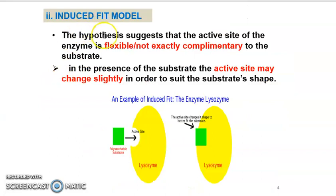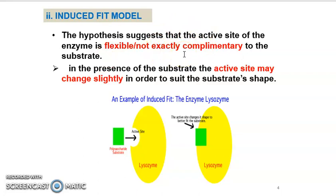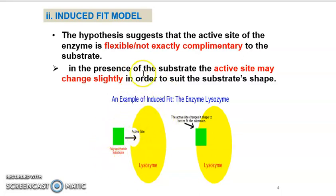What is the difference with the induced fit model? For the induced fit model, the hypothesis suggests that the active site of the enzyme is flexible. The active site of enzyme is not exactly complementary to the substrate. This means the active site does not have to be a complementary fit to the substrate — that's what we mean by flexible.